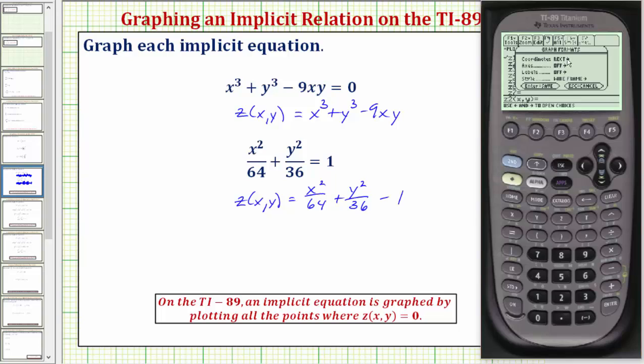The coordinates are set to rectangular, which is fine. Let's turn the axes on, so we'll press the down arrow, right arrow, and then number two for axes. Let's go down to style. Press the right arrow. We need to change the style to option five, implicit plot. So we'll press five, and now we can graph the equation.